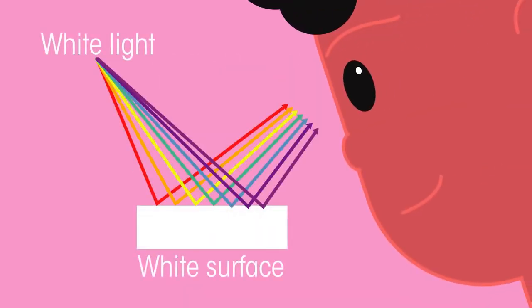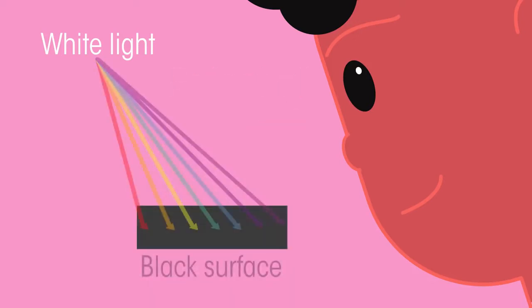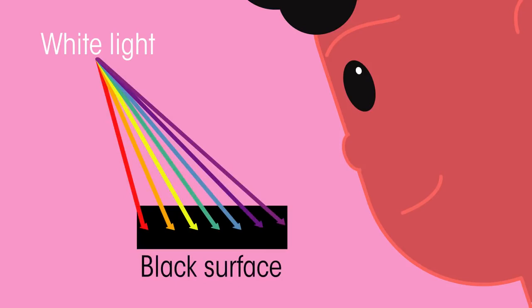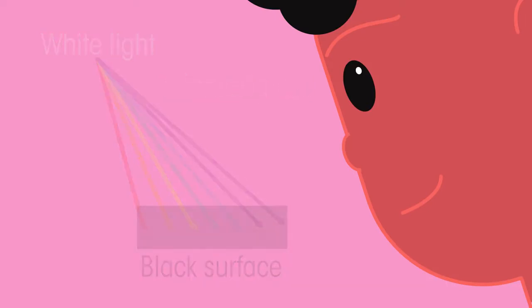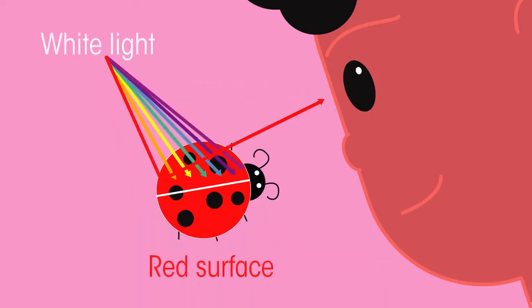White objects reflect all the light that hits them and absorb none. Black objects reflect none and instead absorb all the light that hits them. A red object absorbs all the wavelengths except red, which is reflected.